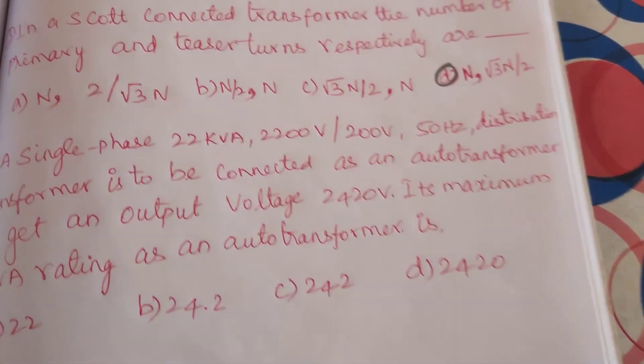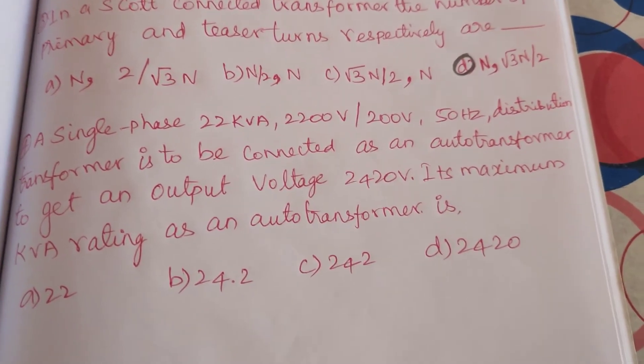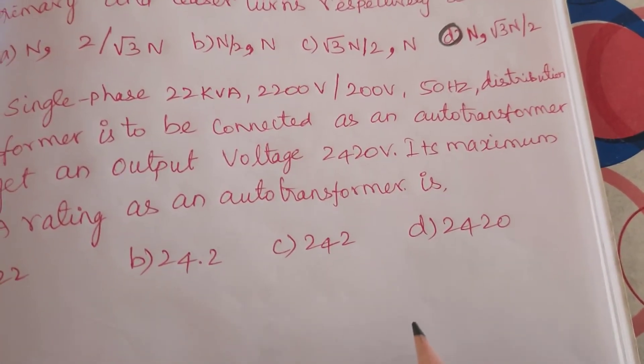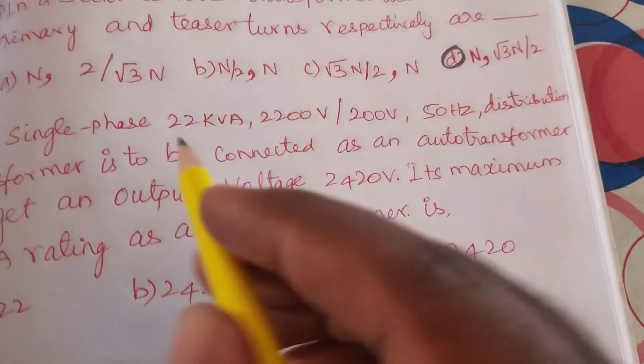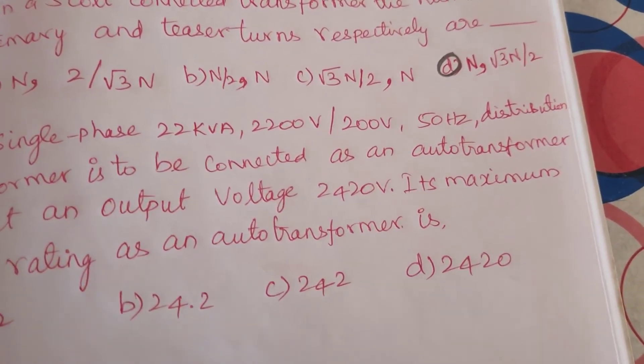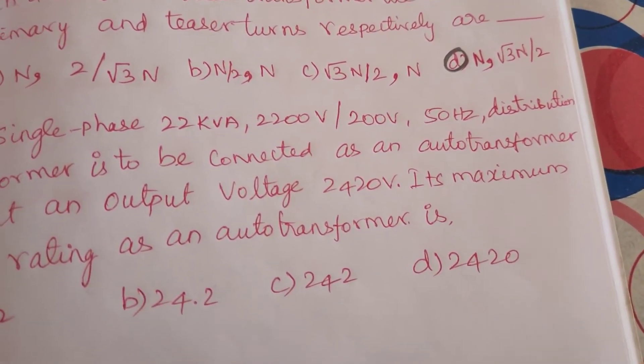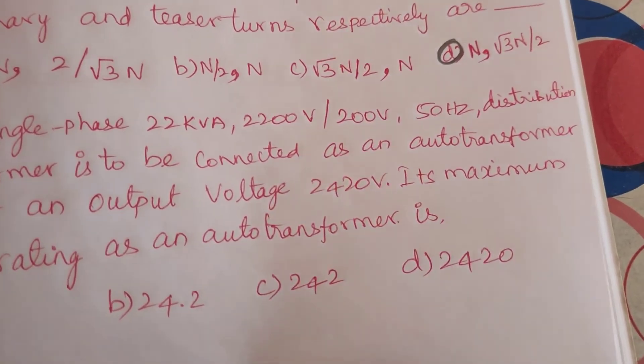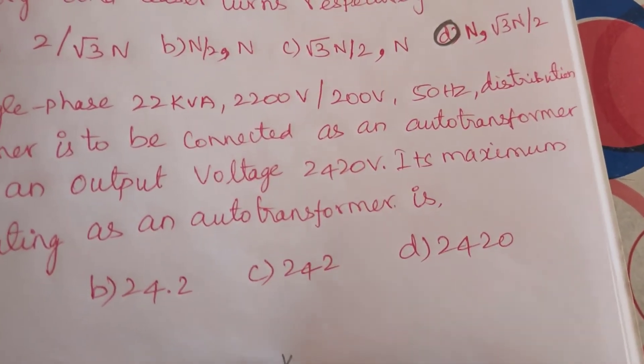The sum of kVA rating, that is two-winding transformer kVA rating, that is 22 kVA. 22 kVA into 11 will be the answer for auto transformer.